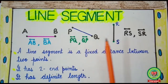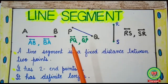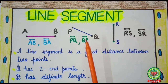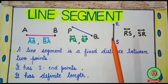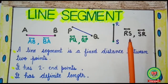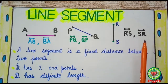Here I have taken two more lines. You can name the first one as PQ with the symbol of line segment, or QP with the symbol of line segment. Similarly, the next one is RS — you can name it RS or SR with the symbol of line segment.